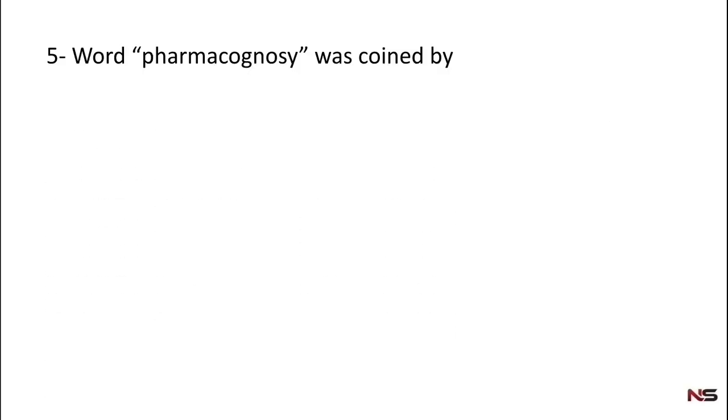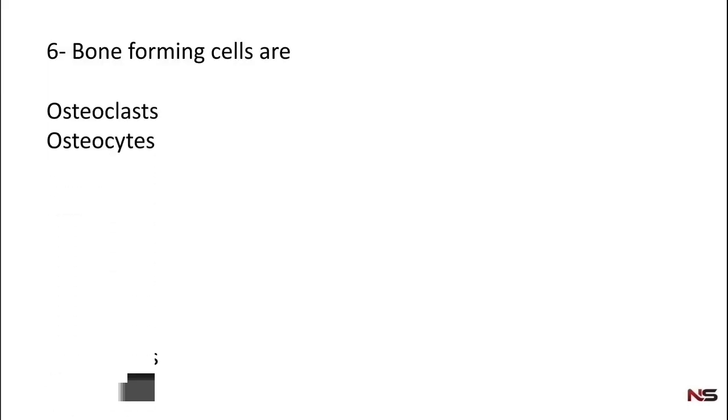Question number five: the word pharmacognosy was coined by - Galen, Seydler, Hippocrates, Dioscorides. The correct answer is Seydler. Question number six: bone forming cells are - osteoclasts, osteocytes, osteoblasts, or osteoids. Correct answer is osteoblasts.